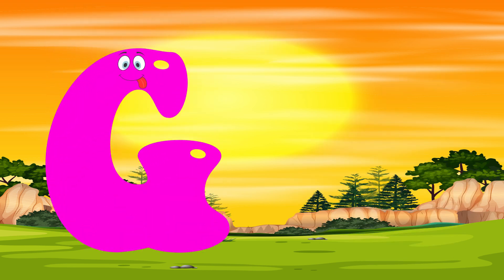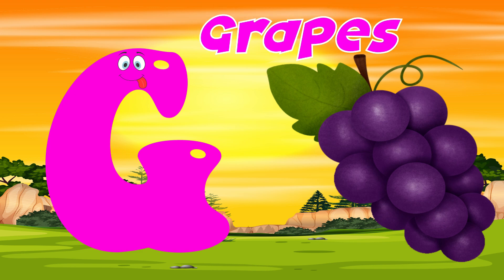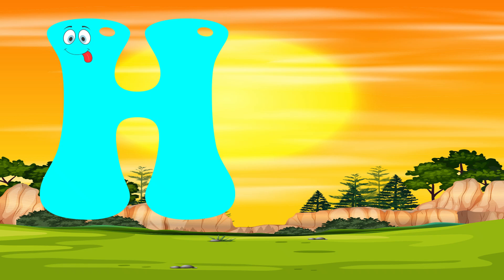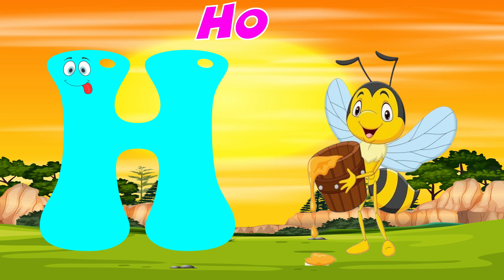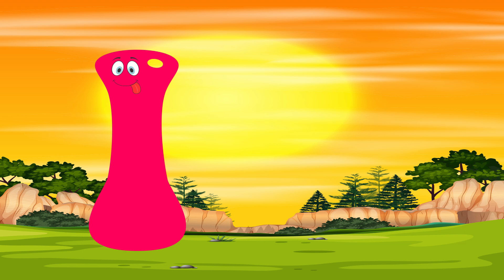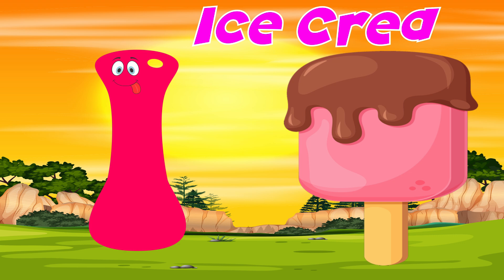G. G is for crabs. H. H is for honey. I. I is for ice cream.